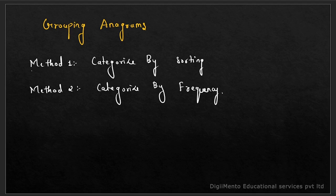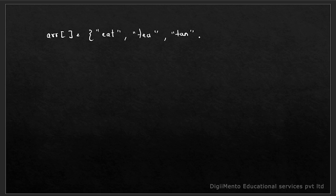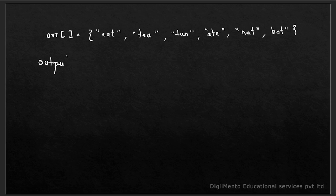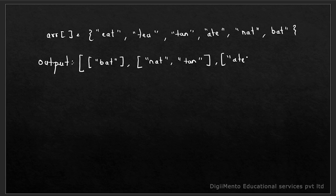Before coming to the two methods, let's understand what an anagram is. I'll take three examples. So the input array looks like: eat, tea, tan, ate, nat, bat. The output we require groups these together: one group is ate, eat, tea; another is nat, tan; and bat is alone.